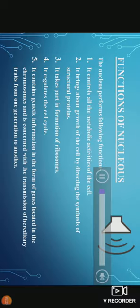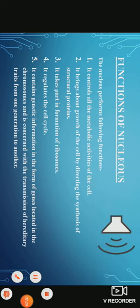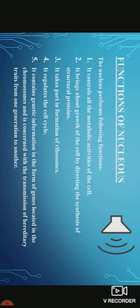Now we will talk about the functions. The nucleus performs following functions: It controls all the metabolic activities of the cell. It brings about growth of the cell by directing the synthesis of structural proteins. It takes part in formation of ribosomes. It regulates cell cycle. Nucleus contains genetic information in the form of genes located in the chromosomes and is concerned with the transmission of hereditary traits from one generation to another. This is all about the nucleus.